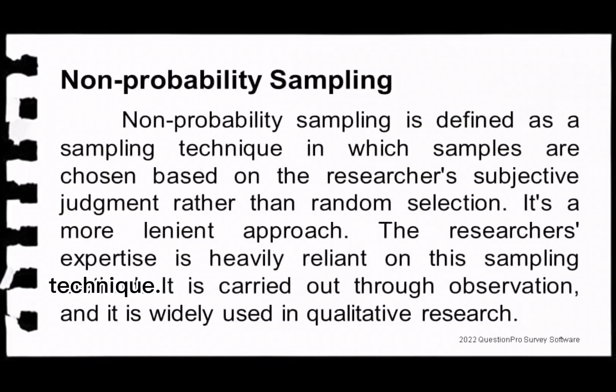Non-probability sampling is defined as a sampling technique in which samples are chosen based on the researcher's subjective judgment rather than random selection. It is a more lenient approach, heavily reliant on the researcher's expertise. It is carried out through observation and is widely used in qualitative research. Non-probability sampling is ideal for exploratory studies such as a pilot survey, and researchers use it when random probability sampling is impossible due to time or cost constraints.